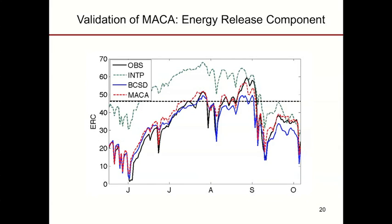Briefly, we can look at how MACA compares to daily BCSD using the energy release component — a metric used by fire management to gauge fire danger that integrates temperature, precipitation, relative humidity, and insolation. Rather than a single variable, it represents the integral of meteorology over time and is a better way to gauge method performance for a given application. Observations are shown in black, and we can see that BCSD and MACA are very close in capturing the magnitude.